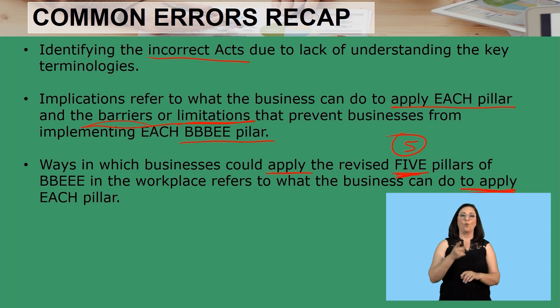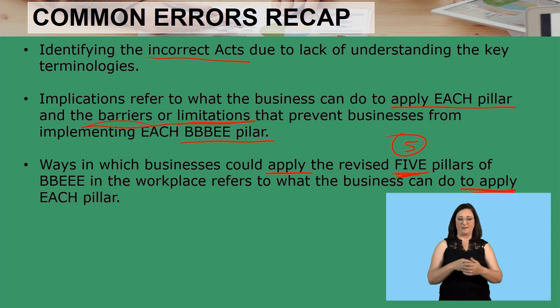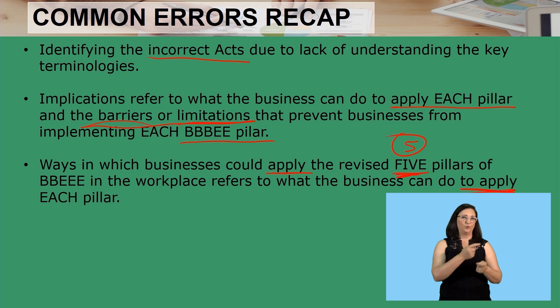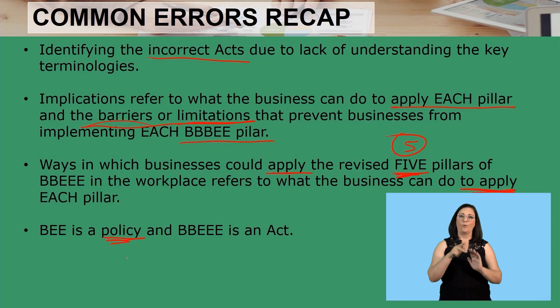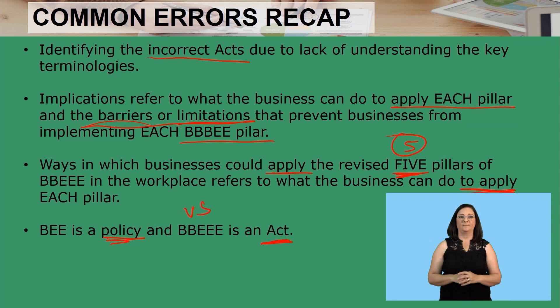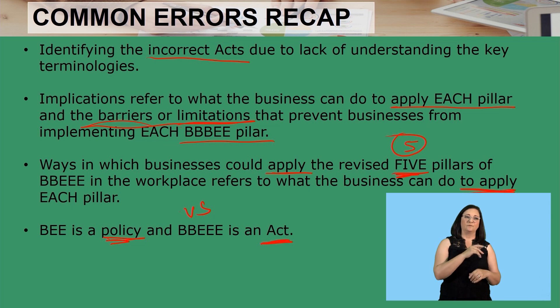It refers to what the business can do to apply each pillar. For example, how can a business apply management control? By enabling black people to make decisions — including them in the decision-making of the business. We also mentioned that BEE is a policy whereas Triple BEE is an act. You must distinguish the differences between the two.